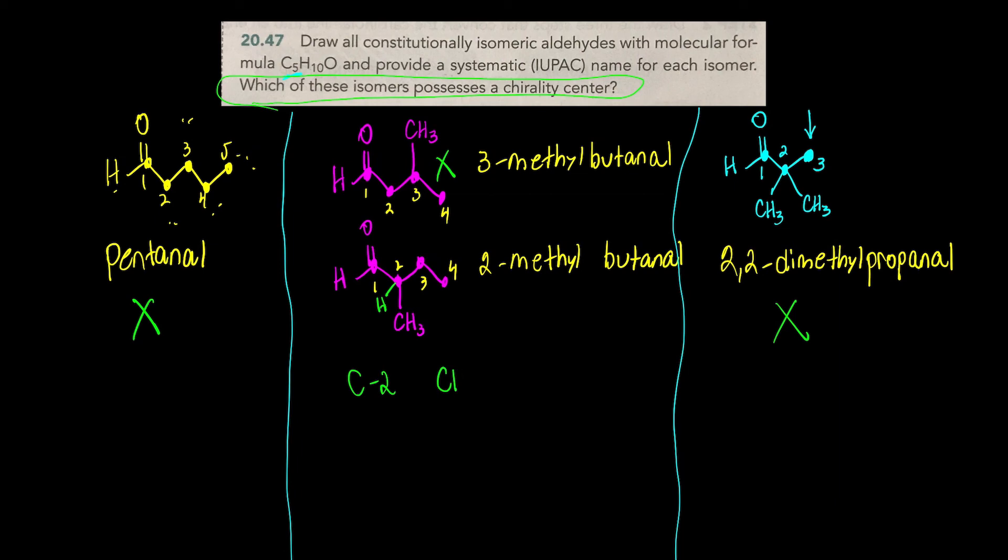Carbon two has four groups attached to it. It's got an aldehyde, it's got a hydrogen attached to it, it's got a methyl group attached to it, and it's got an ethyl group. In order for a molecule to possess a chirality center, it needs to have four different groups attached to it.